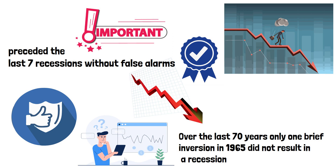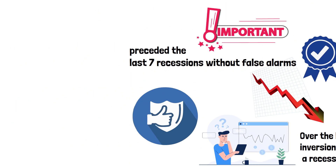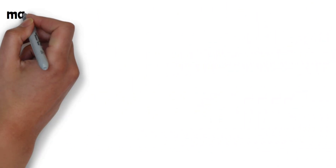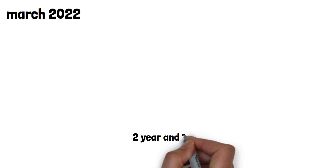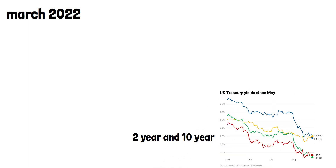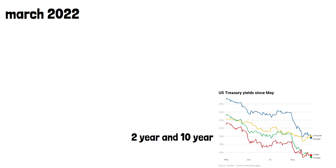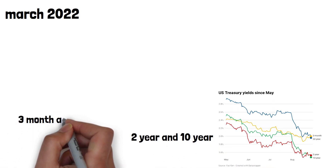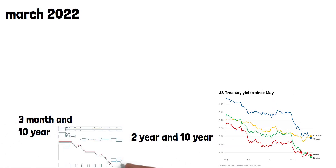In March 2022, the two-year and ten-year US Treasury yield inverted. More recently, the three-month and ten-year yields also inverted.